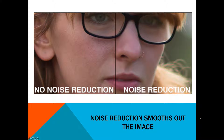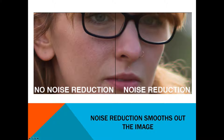Here's a great example image. On the left there is no noise reduction, and on this side there's a lot of noise reduction, which actually means that the skin looks very smooth. So that's what noise reduction does — it smooths out the image.